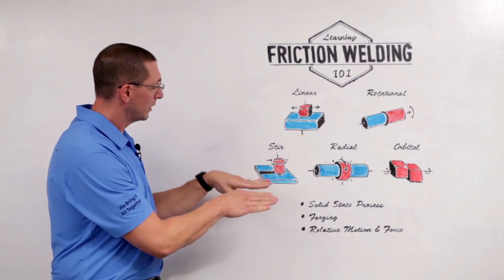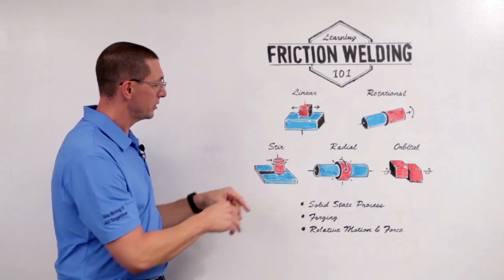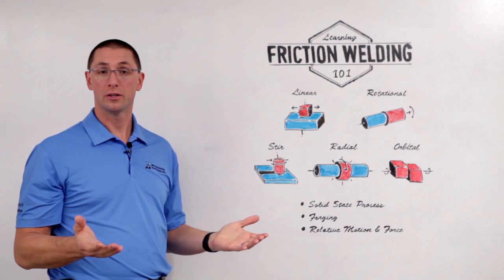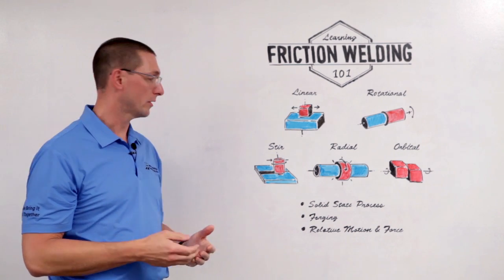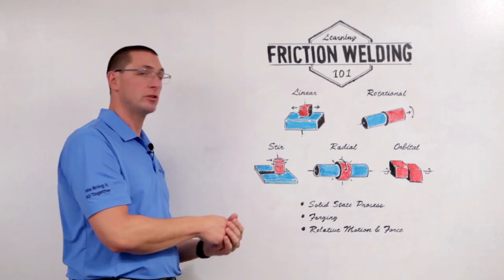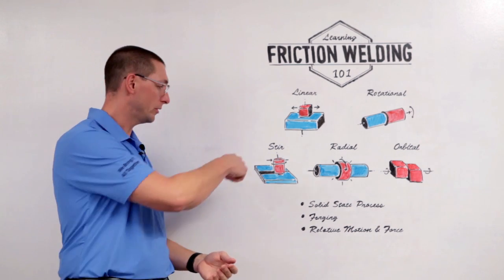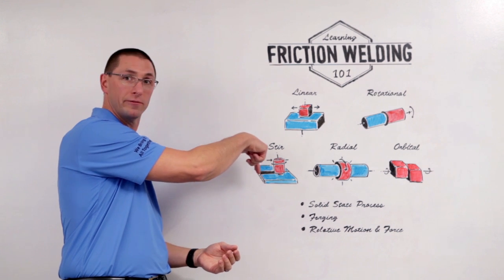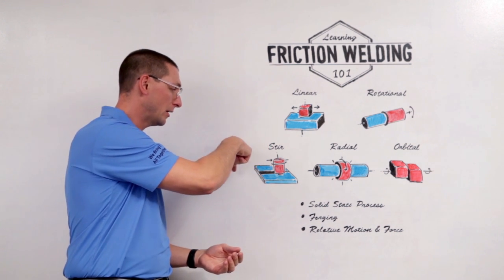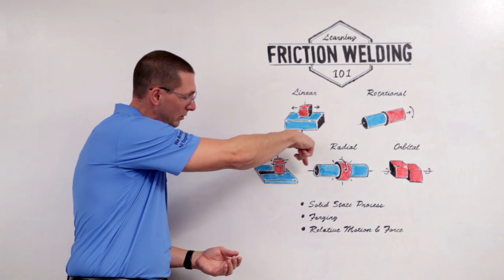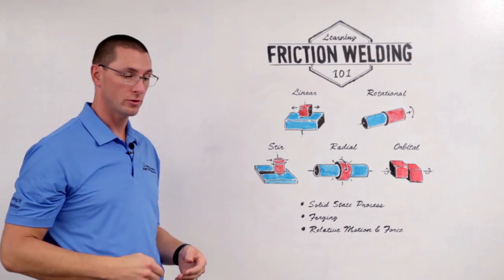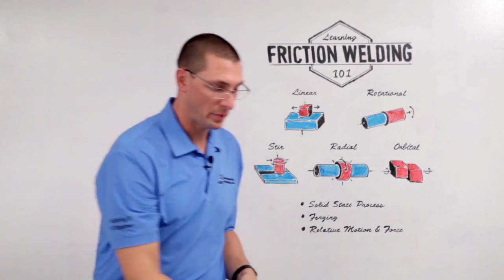With friction stir welding, I have two stationary pieces that could be sheet metal or an extrusion, and I have a non-consumable pin tool that is rotating and providing the force for forging. As it traverses along the seam, it leaves a forged wake in its path.